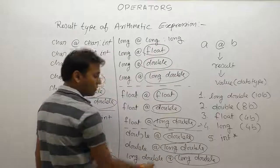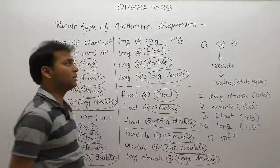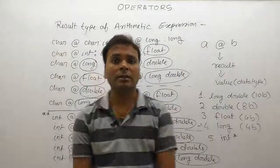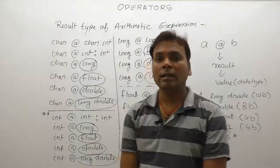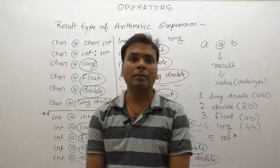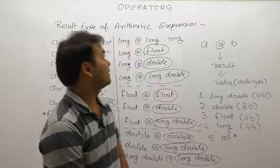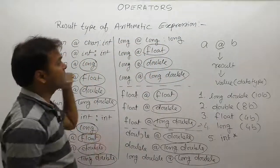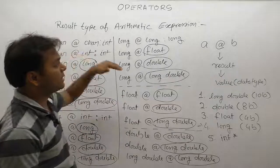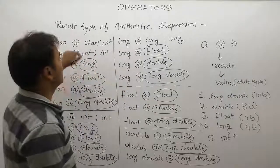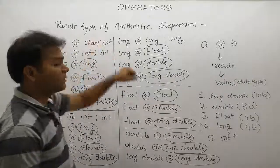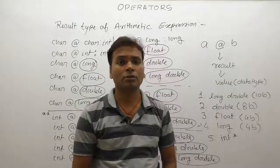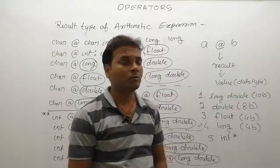These are the conventions for identifying the result type of an expression. Following these conventions, we can identify the possible result type of any arithmetic expression.